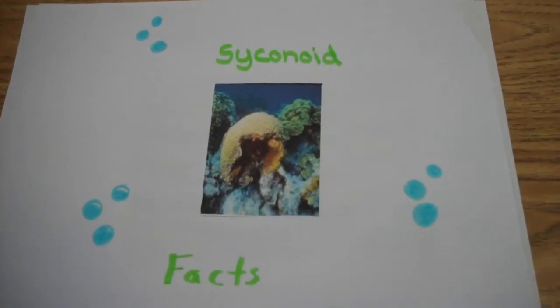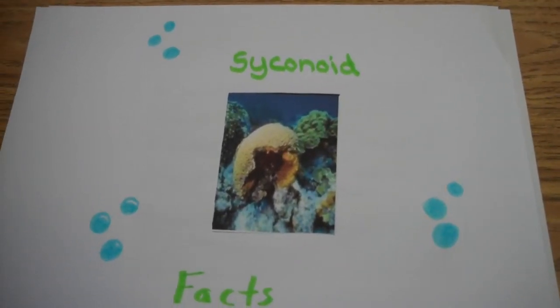One additional fact about a syconoid sponge is that it has no definite shape.